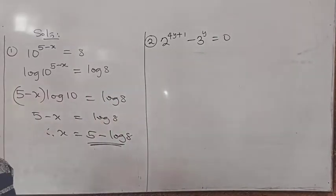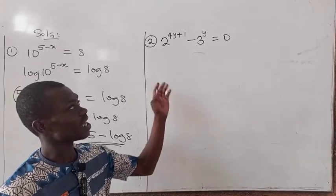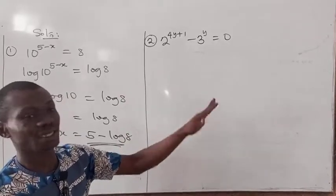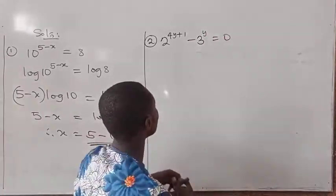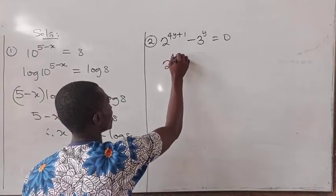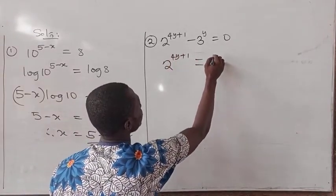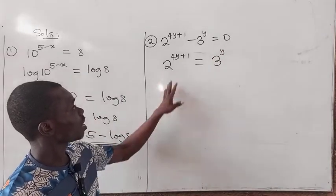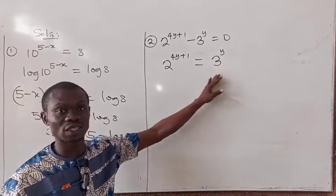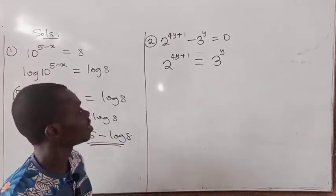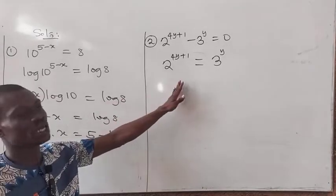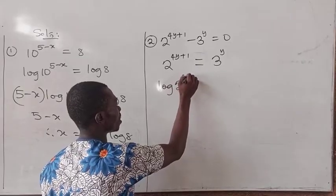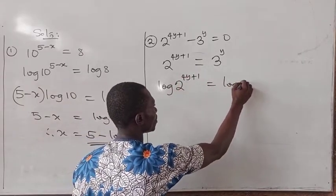For the second example, we have 2 raised to the power (4y plus 1) minus 3 raised to the power y is equal to 0. We rearrange to get a left- and right-hand side, so 2 raised to the power (4y plus 1) equals 3 raised to the power y. Since we cannot write 2 and 3 in the same base, we take the log of both sides, giving log of 2^(4y+1) equal to log of 3^y.